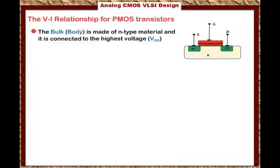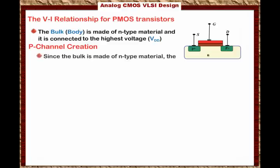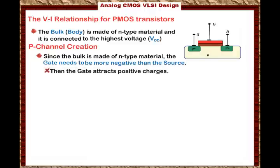The body is N-type material, but we have to create a P-channel between the source and the drain in order for current to conduct. Since the bulk is made of N-type material, the gate needs to be more negative than the source — that means VGS is negative. The gate will then attract positive charges, and as shown in the animation, as we attract the positive charges, the channel is created.